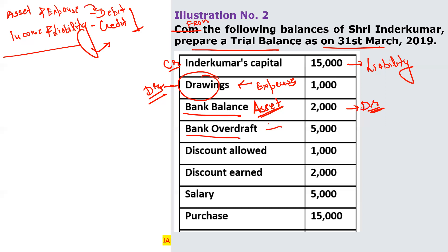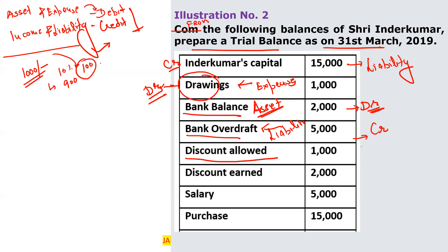Bank overdraft is a liability — we have to pay it back to the bank — so it goes on the credit side. Discount allowed: when we give a discount, it is a loss or expense for us. Earlier we earned 1,000, now we earn 900 after giving 100 discount. So discount allowed is an expense and goes on the debit side.